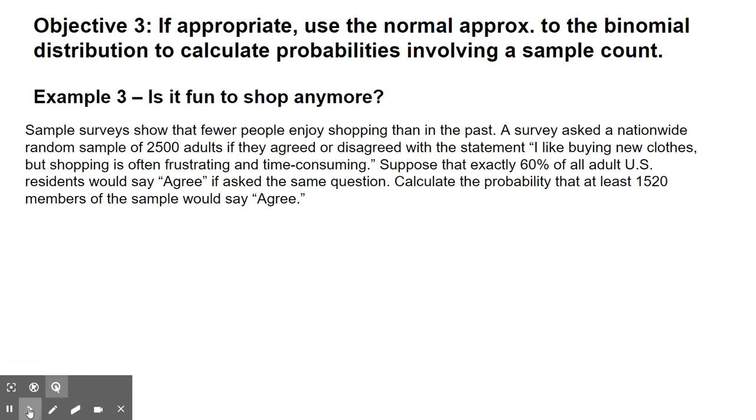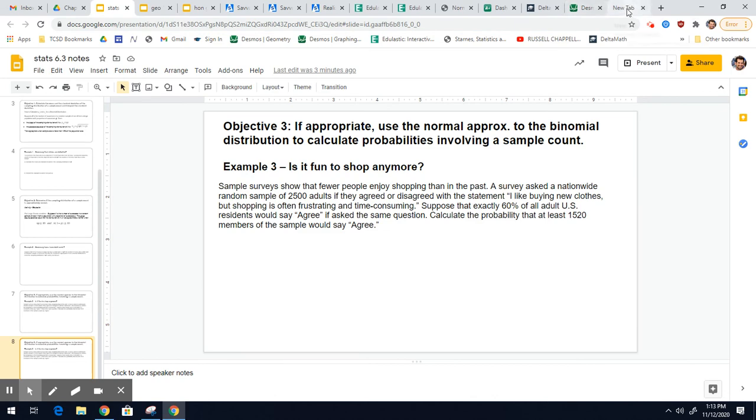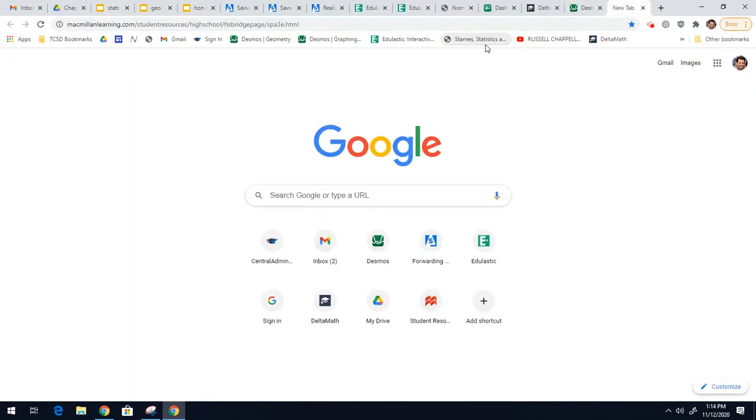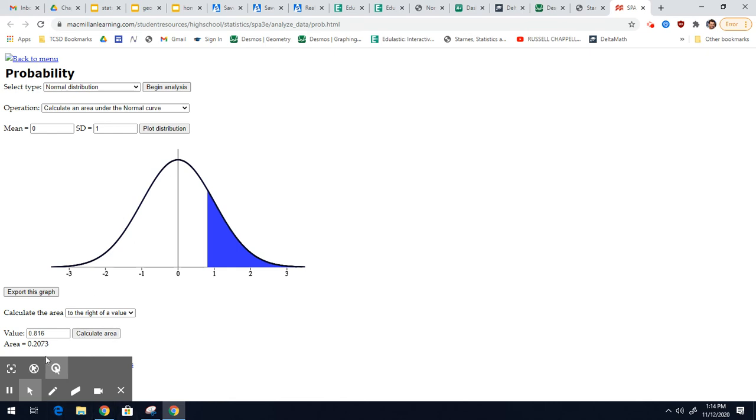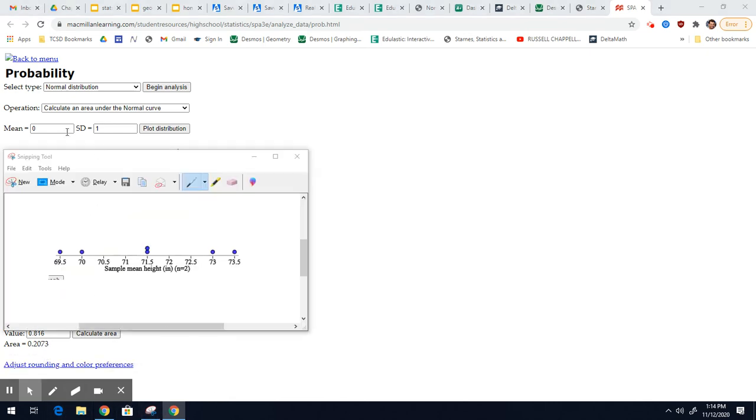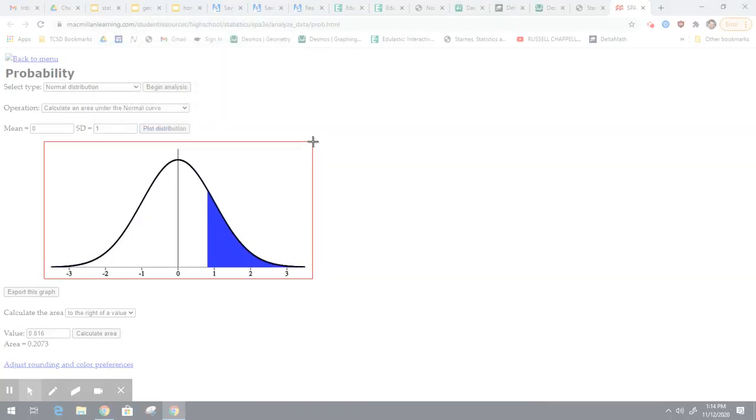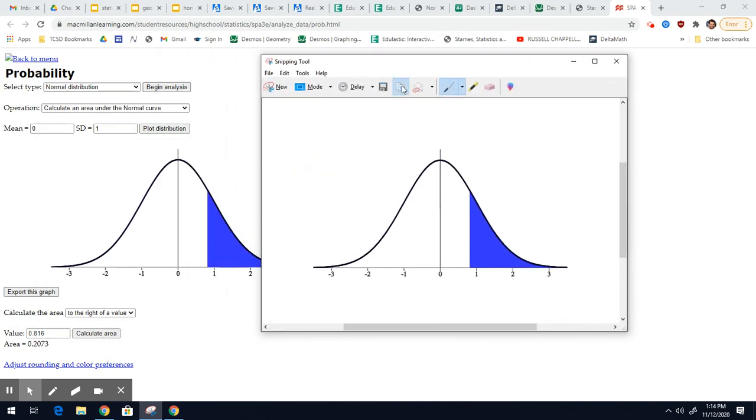So I'm here. This is the statistical applet's probability. This was a normal distribution. That's great for us. We are calculating an area. Our mean is always 0 and standard deviation is 1. And we're going to calculate the area. And now we're going at least, so that's to the right of a value. And our z value is 0.816. And when I type that in there, I get a probability of 0.2073. So you're going to include that probability and take a picture of this. I'll take a picture of the normal distribution, the standard normal distribution. I got that picture. I'm going to copy it and paste it into my Edge Elastic. 2073 is my probability.